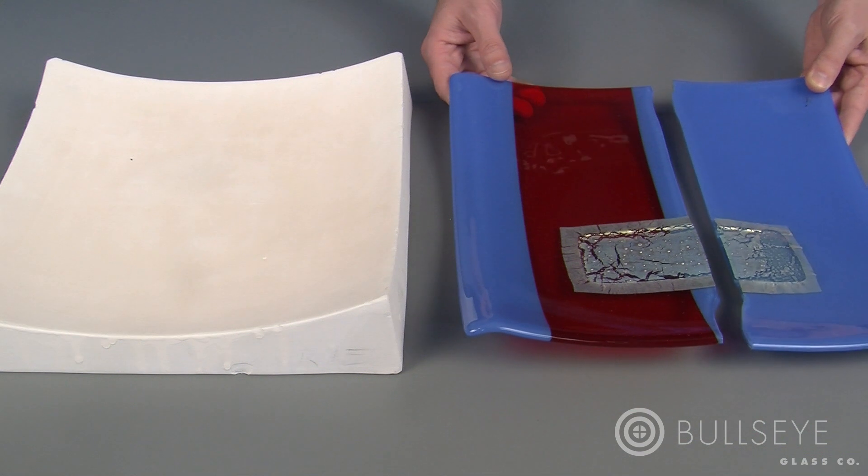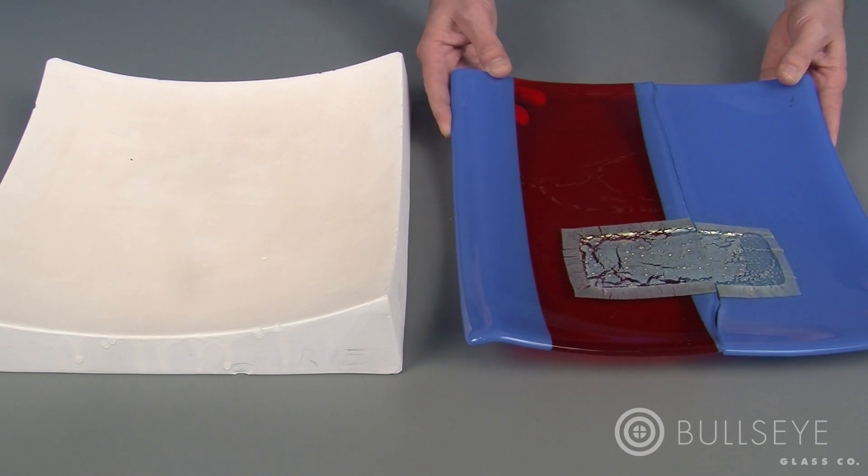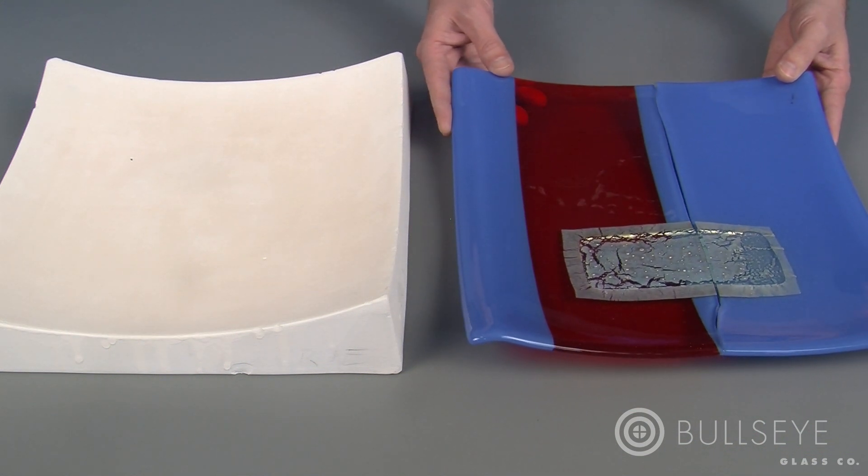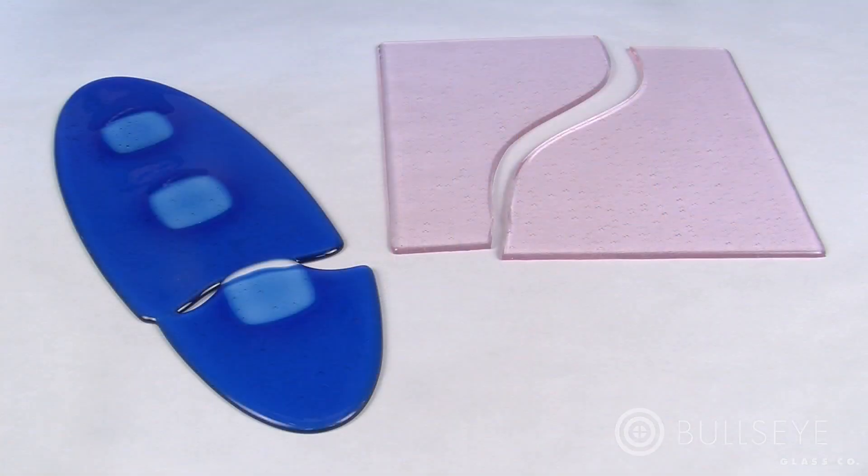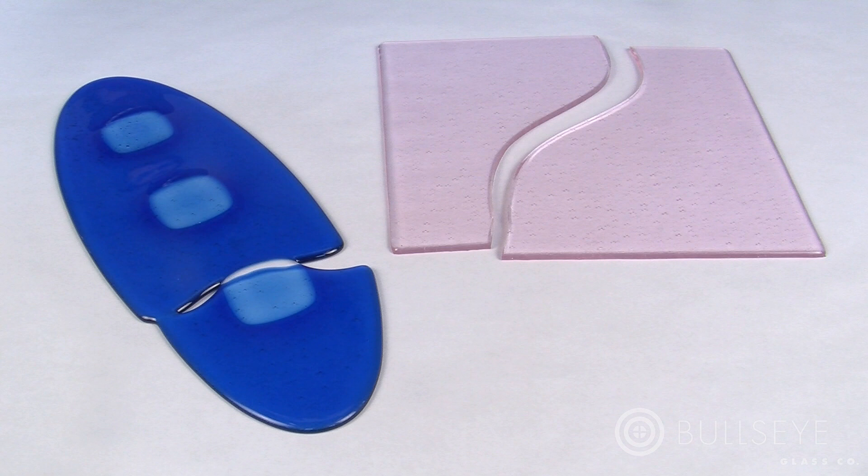The good news is that a piece always breaks for a reason. Understanding the working properties of the material can keep it from happening. This lesson will cover two of the most common causes of a piece breaking: thermal shock and improper annealing.